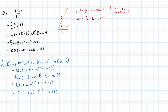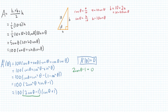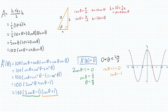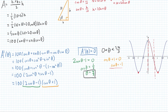Setting the first derivative equal to zero, from the factor (2 cos theta minus 1), cos theta equals 1 over 2, which happens when theta equals pi over 3. This is within our restriction that theta is greater than 0 and less than 2 pi over 3. For the factor (cos theta plus 1), cos theta equals negative 1, which occurs at pi — but that does not exist within our interval. So our critical value is theta equals pi over 3.